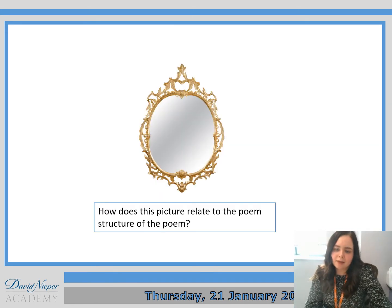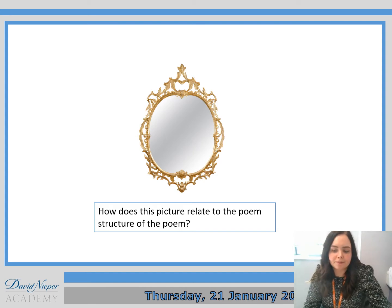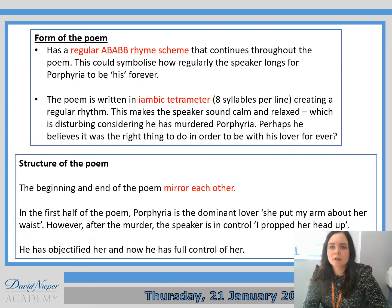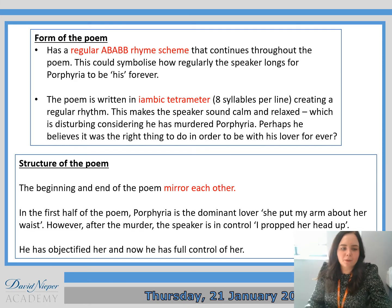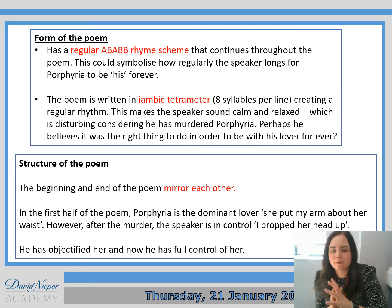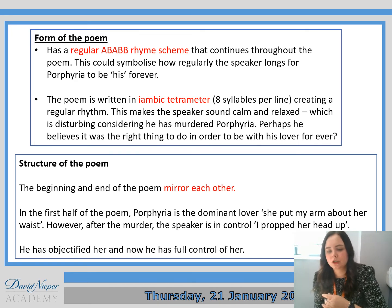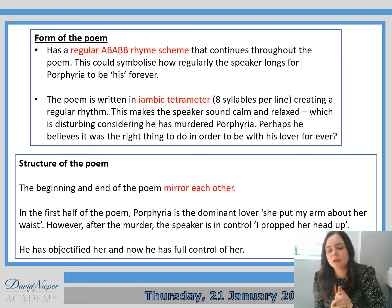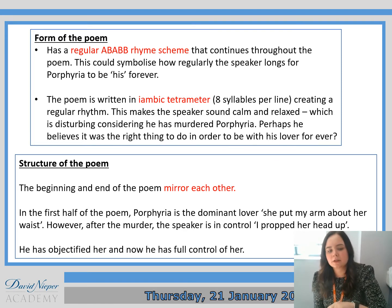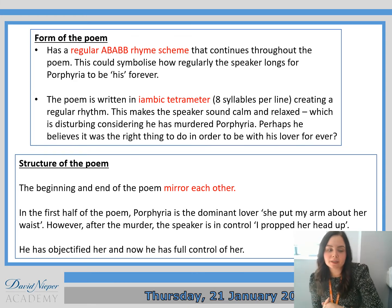So how does this image relate to the structure of the poem? The link I made between the picture was in the structure of the text. At the beginning and the end of the poem there's a mirror. In the first half of the poem, Porphyria was the dominant lover — 'she put my arm around her waist.' However, after the murder, the speaker was in control — 'I propped her head up.' So he's objectified her and now he has full control of her. We've spoken about that mirror imagery previously.